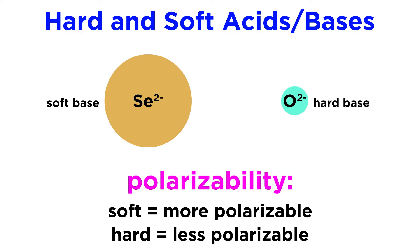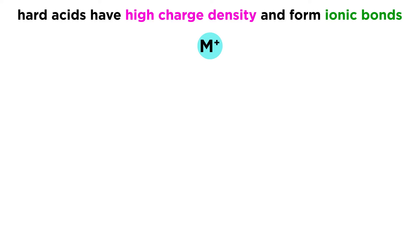Smaller metal ions are hard acids. We can say the same for a base: if a lone pair or negative charge is highly localized on a singular small atom, this would be a hard base. If the charge is diffuse, distributed around a larger molecular volume, or an atom with a large radius, this would be a soft base.